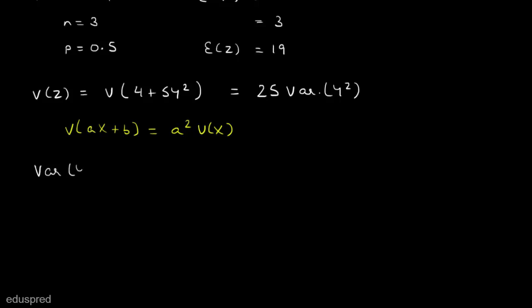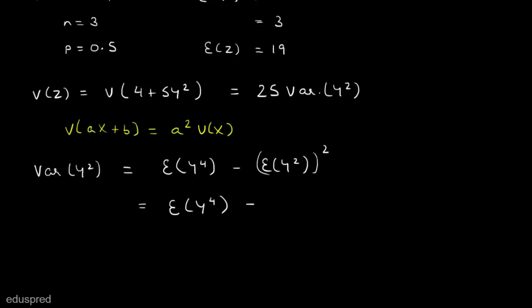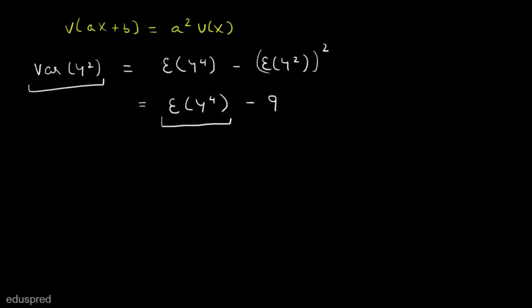Let's find the variance of y squared. We know that variance of y squared equals the expected value of y to the power 4 minus the expected value of y squared, whole squared. We already know that expected value of y squared equals 3, so variance of y squared equals expected value of y to the power 4 minus 3 squared, which is minus 9. To find variance of y squared, we first need to find E[y⁴] using the binomial formula.